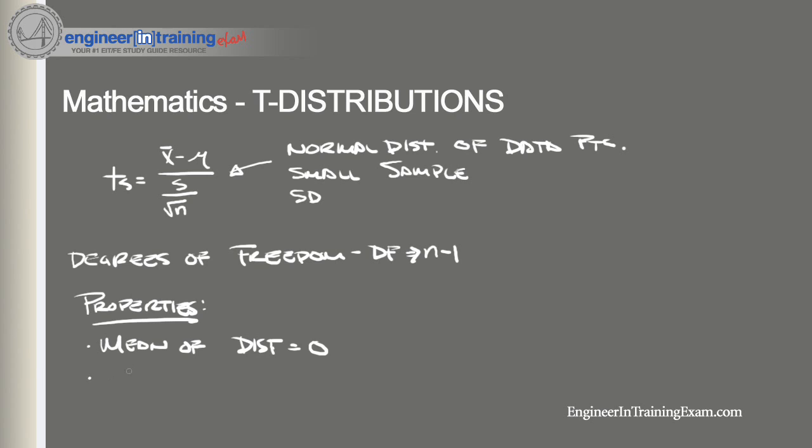Secondly, the variance is equal to v divided by v minus 2, where v is the degree of freedom, and is also greater than 2.